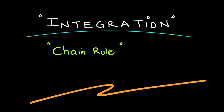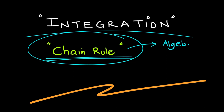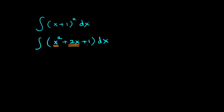In this video, we will learn a technique of integration for algebraic expressions that is known as the chain rule. For example, if I want to integrate (x + 1)² dx, I should first expand the bracket, which is x² + 2x + 1 dx, and then comfortably integrate each term.